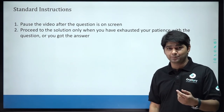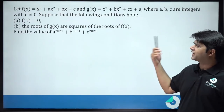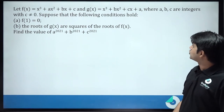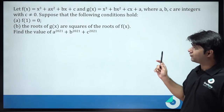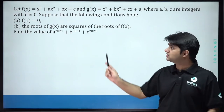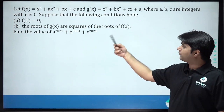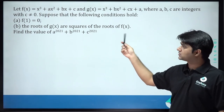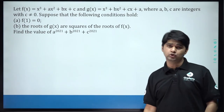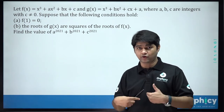Let's get to cracking olympiads one question at a time. Today's question: let f(x) = x³ + ax² + bx + c and g(x) = x³ + bx² + cx + a, where a, b, c are integers with c not equal to 0. The conditions are: first, f(1) = 0, and second, the roots of g(x) are squares of the roots of f(x). We need to find the value of a²⁰⁰¹ + b²⁰⁰¹ + c²⁰⁰¹. Pause the video and give it a try. The next thing you will hear from me will be the solution.